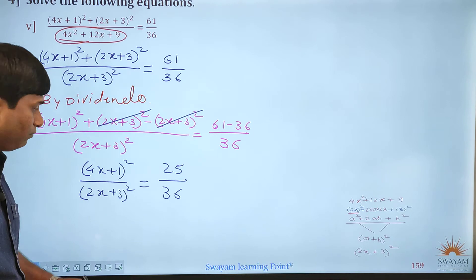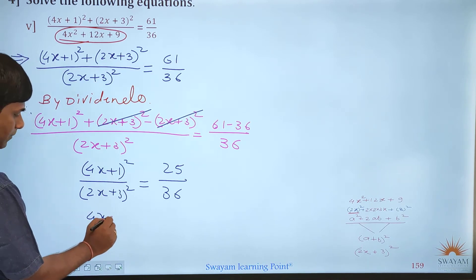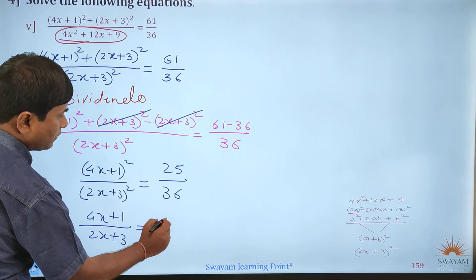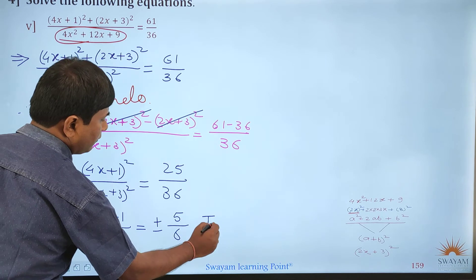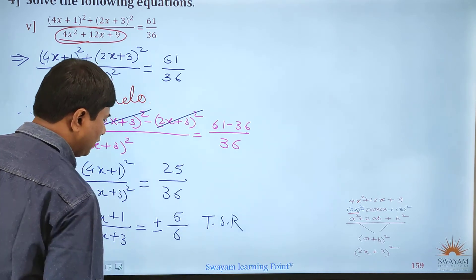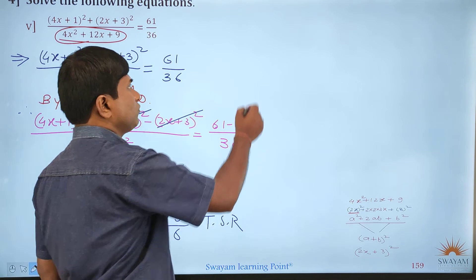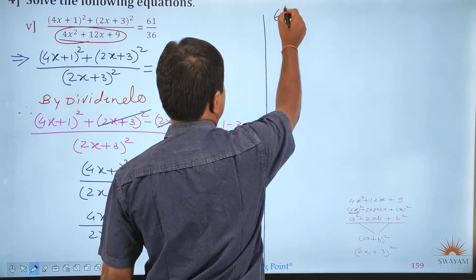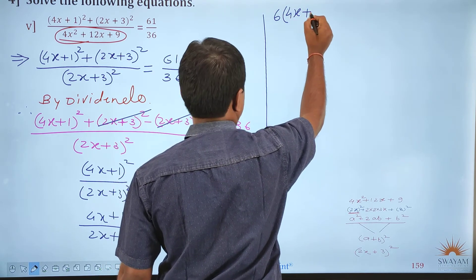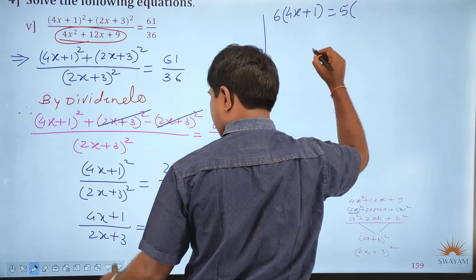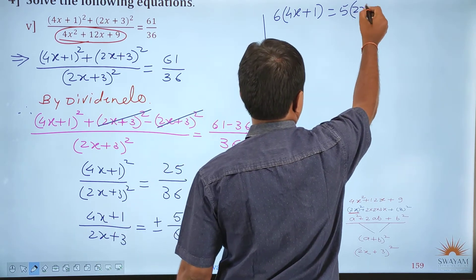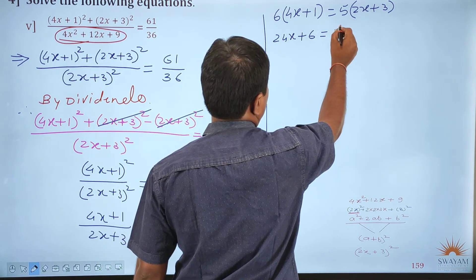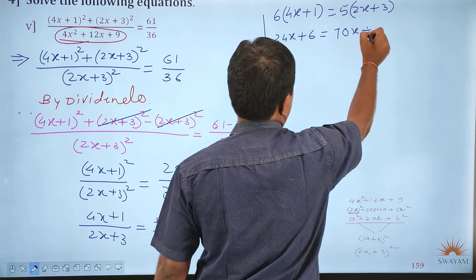I recommend you consider both square roots. So: (4x+1) divided by (2x+3) is equal to ±5/6, taking the square root. We will solve the positive square root case here; you solve the negative case. So: 6(4x+1) = 5(2x+3), which gives 24x plus 6 is equal to 10x plus 15.